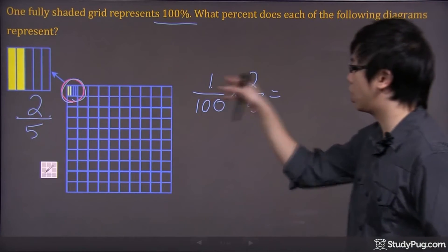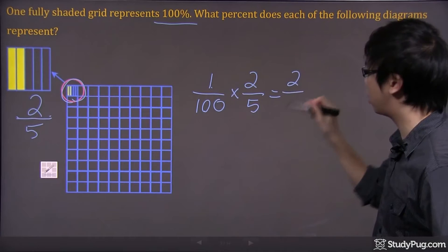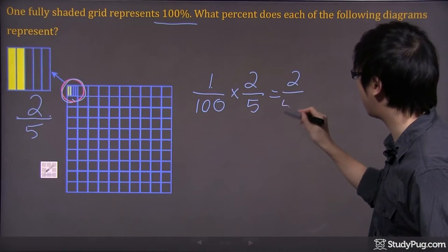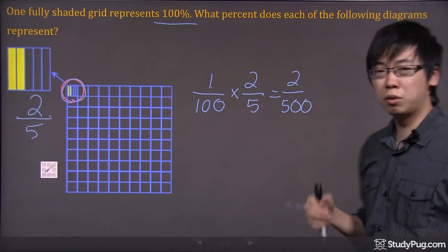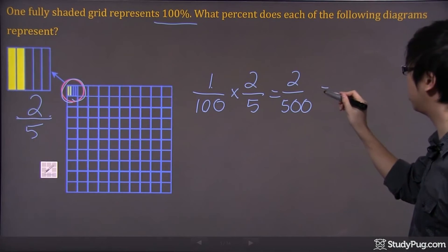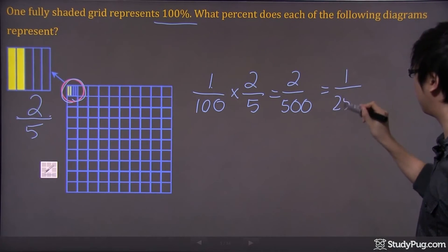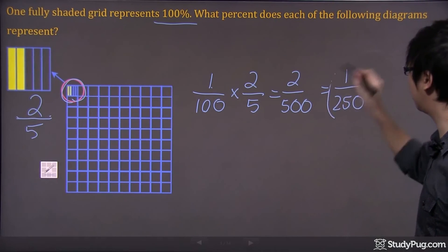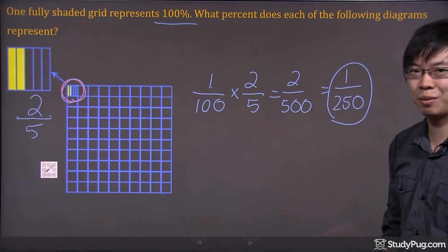And the rest of the work is simple. Top times the top, there's your two. Bottom times the bottom, you get yourself a 500. And then if you do the quick math right here, it's simply one over 250. And that is the answer to this question. Thanks for watching.